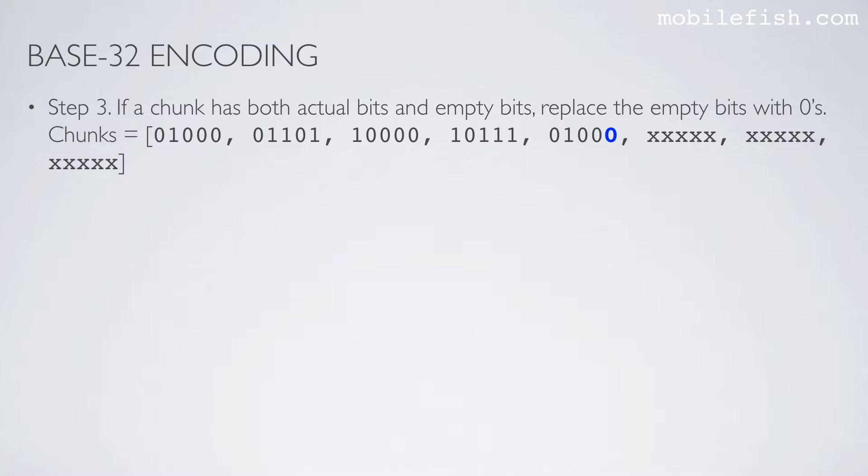Step 3: If a chunk has both actual bits and empty bits, replace the empty bits with zeros. We had an empty bit here, so we replaced it with a zero.